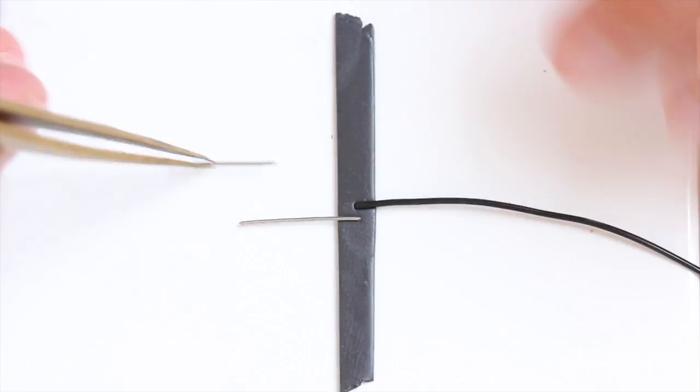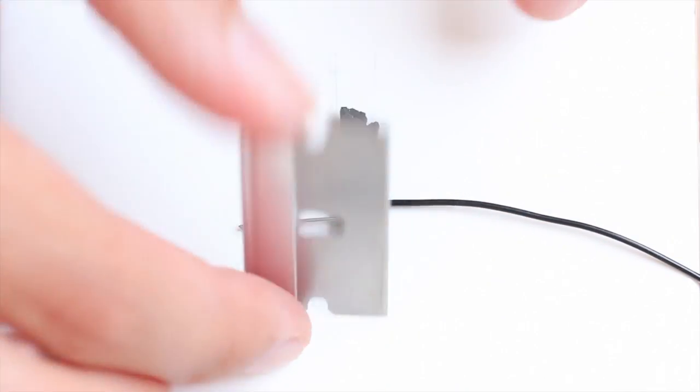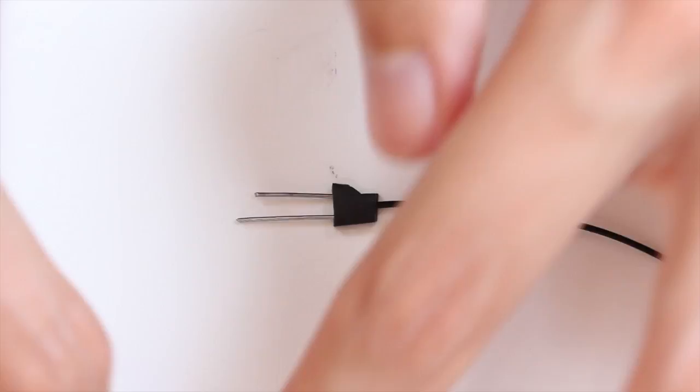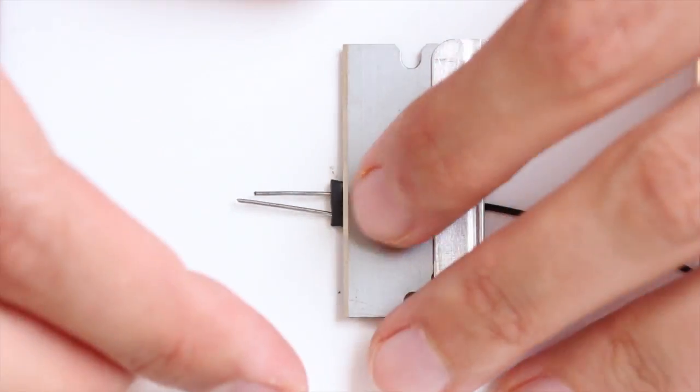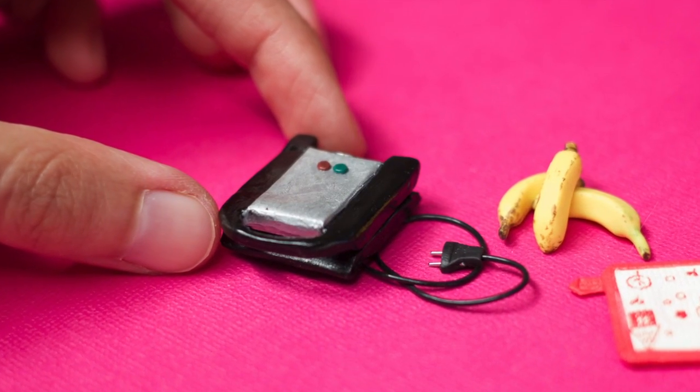And last but certainly not least, I made the plug. I used a caoutchouc cord—just be sure that it withstands the heat. And I used some wire and some black clay. Simple as that. And then I just sculpted all around and baked everything and just glued it to the waffle maker.